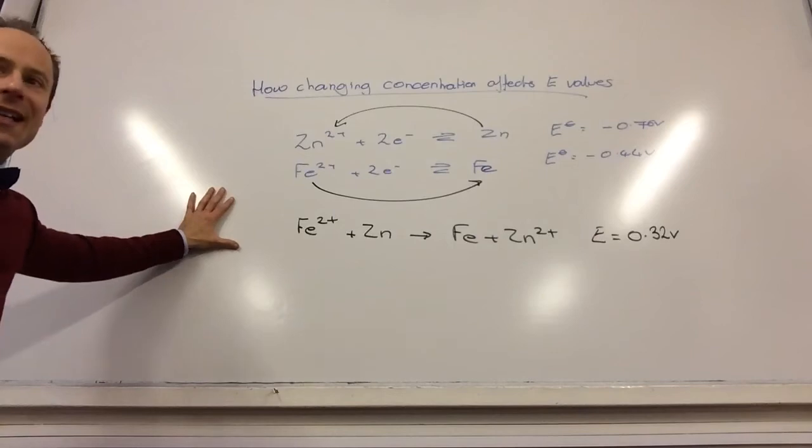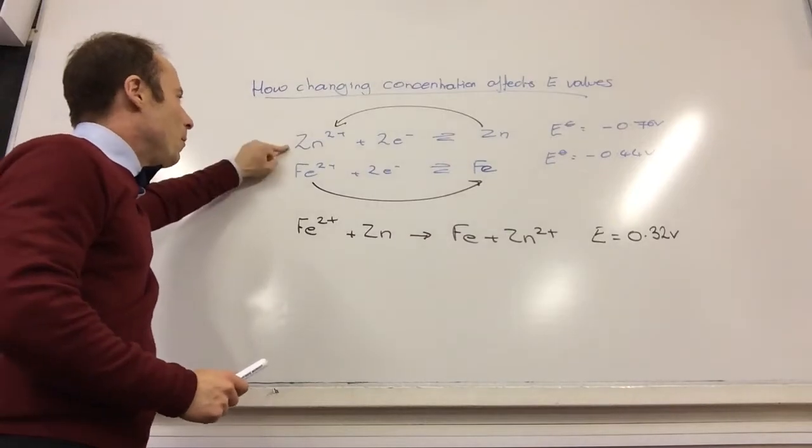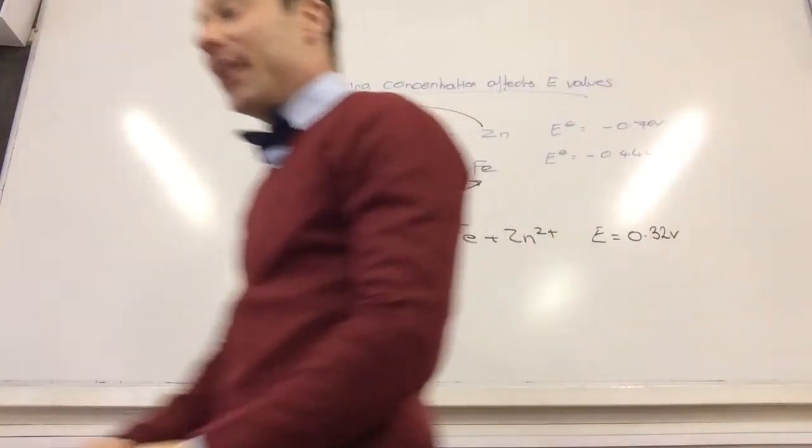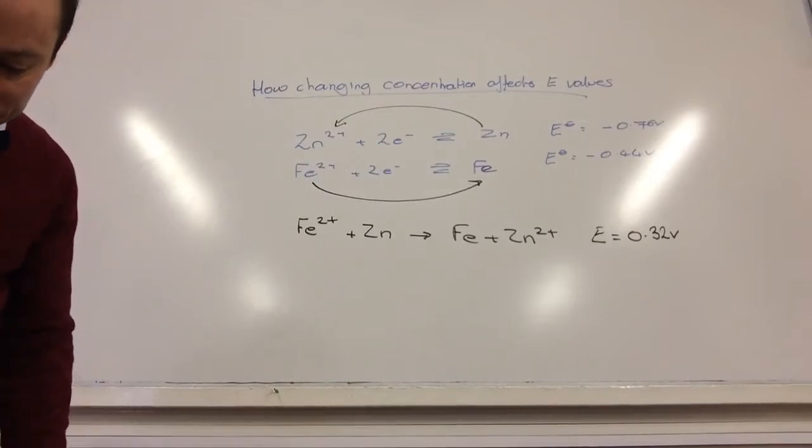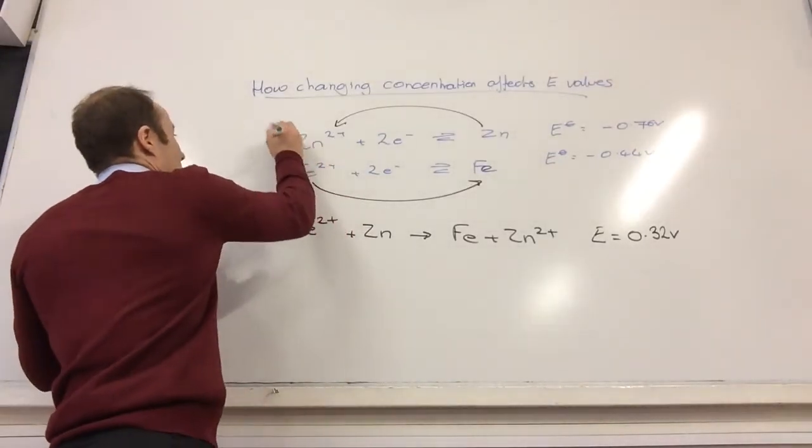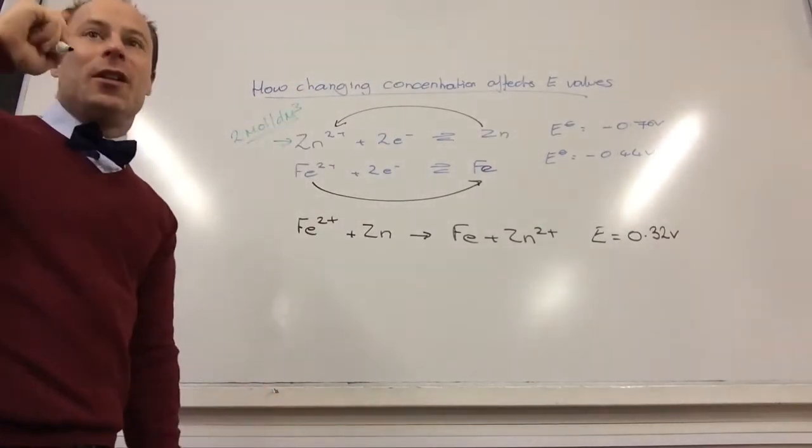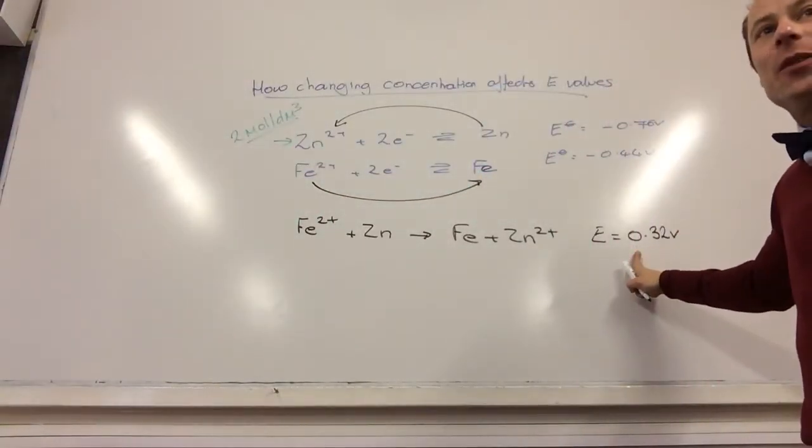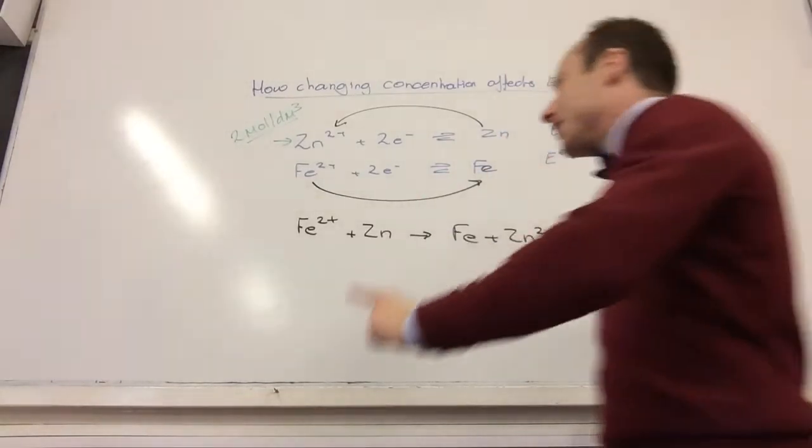So let's say this is under standard conditions. So this is saying I am using one mole per decimetre cubed of that and one mole per decimetre cubed of that. Now, let's say I come along now and rather than doing one mole per decimetre cubed, I go absolutely mad and decide for the zinc I am going to use two moles per decimetre cubed solution. Yeah, we are going to have to think how will it affect this value here. Will it make the reaction more feasible or less feasible? So we are going to have to think this one through.